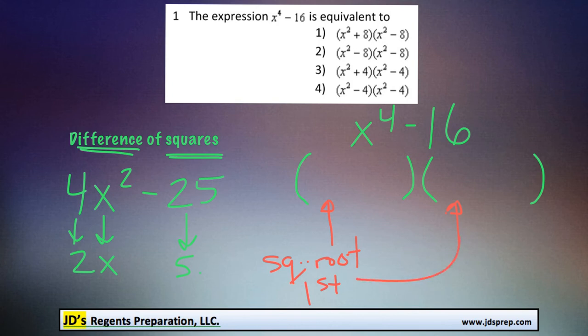And then, so that'll be in both of these cases, and then in the right-hand spot of both set of brackets, you would write the square root of the second term. Okay, so the square root of x to the power of 4, that is x squared. And I know that's true because x squared times x squared would get you x to the power of 4.